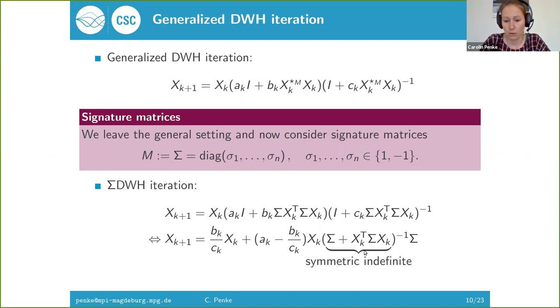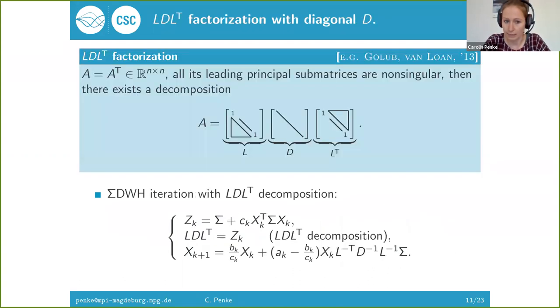We can rewrite this iteration such that we see that we have to solve a linear system again. But now the system cannot be guaranteed to be positive definite. It is indefinite. We cannot do a Cholesky factorization but instead we can do an LDLT decomposition. An LDLT factorization is just the LU factorization applied to symmetric matrices. You can decompose a matrix A under certain conditions into a unit lower triangular matrix L, a diagonal matrix D and L transpose.